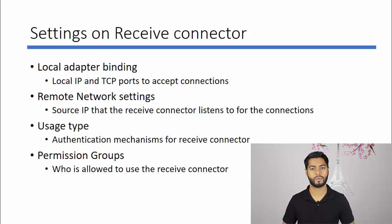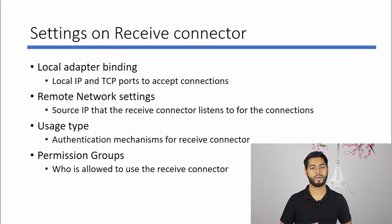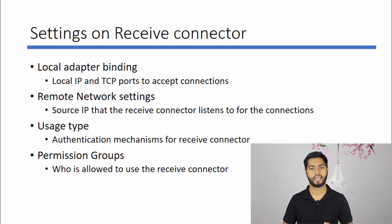Following are the settings available in a receive connector to control and configure incoming connections. The first one is local adapter binding. By default, Exchange Server listens to all network adapters. In an Exchange Server there will be multiple adapters — one for backup, one for internet, one for local connections. If you want to isolate this, you can create two receive connectors and bind them with specific adapters: one for local SMTP connections and one for internet SMTP connections.